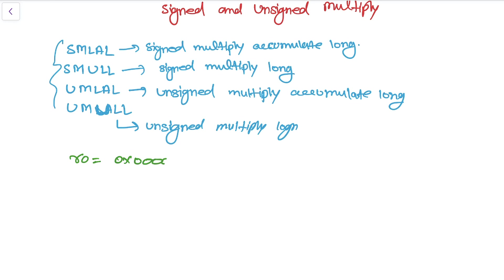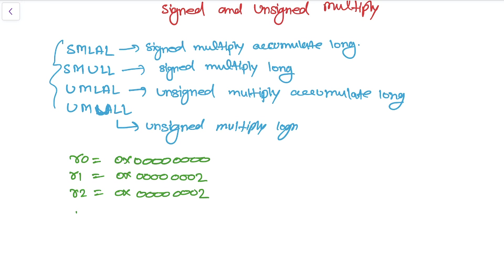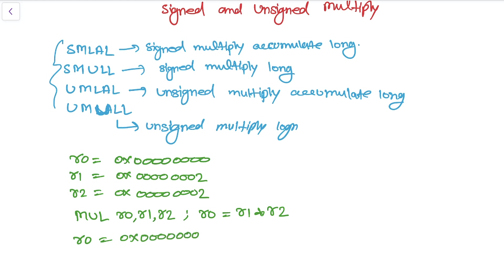Let's say R0 = 0x00, R1 = 0x02, and R2 = 0x0002. If we write multiply R0, R1, R2 — which is equivalent to R0 = R1 × R2 — then R0 becomes 0x04, R1 becomes 0x0002, and R2 remains the same.